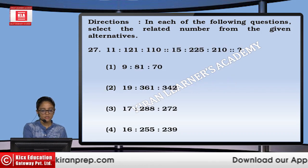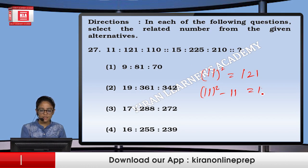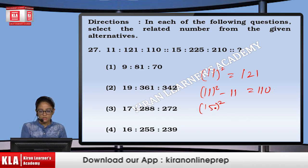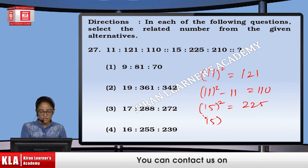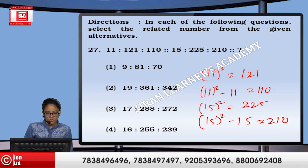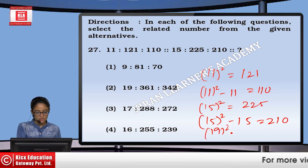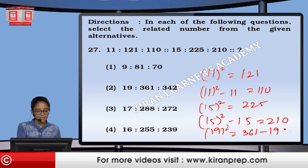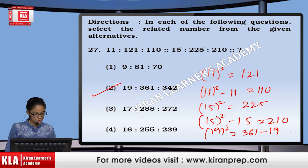Next, 3 cubed is 27. Similarly, 5 cubed is 125, so the option will be the second one. Next, 11 squared is 121 and 11 squared minus 11 gives us 110. Similarly, 15 squared is 225 and 15 squared minus 15 gives us 210. So if I go for option number 2: 19 squared is 361 and 361 minus 19 gives us 342. So we are going to mark option number 2.